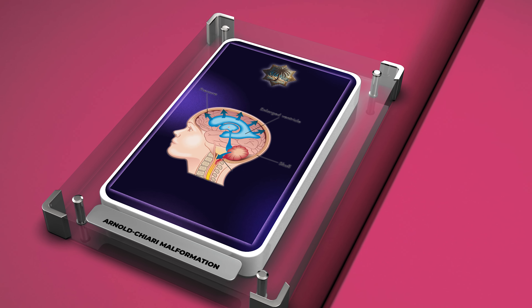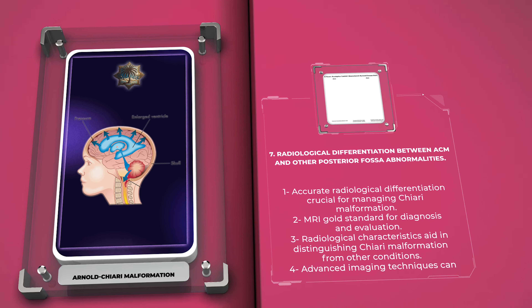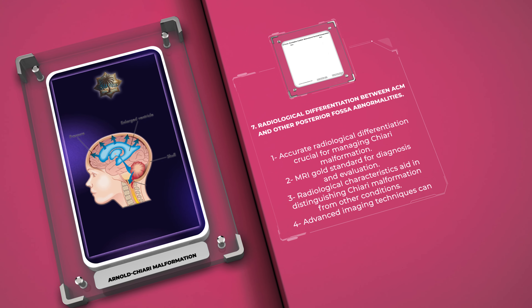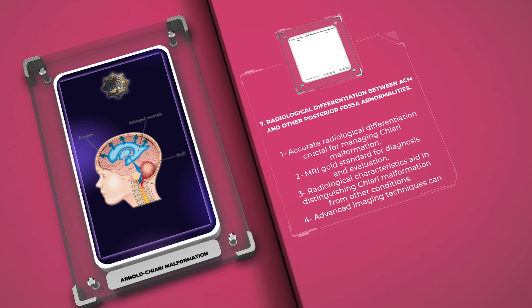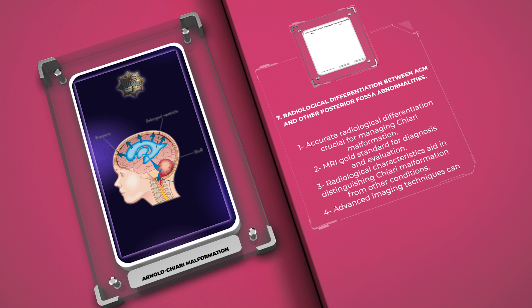Accurate radiological differentiation between Chiari Malformation and other posterior fossa abnormalities is crucial for appropriate management. MRI is the gold standard for diagnosis, allowing visualization of tonsillar descent, cerebellar morphology, and associated abnormalities such as syringomyelia or hydrocephalus. Radiological characteristics — including tonsillar herniation, cerebellar morphology such as scalloping, and syrinx dimensions — aid in distinguishing Chiari Malformation from conditions such as basilar invagination, craniocervical instability, and posterior fossa tumors. Advanced techniques such as cine-MRI and phase contrast imaging can further assess cerebrospinal fluid dynamics and guide surgical decision-making.